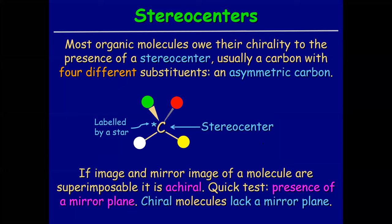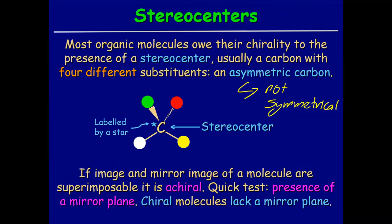When you have four different groups you will have a stereo center. When you have four different groups you will have a stereo center, and this would be an asymmetric carbon - pretty much what this means is not symmetrical, no center of symmetry. If there is a center of symmetry, then there is a mirror image. If there is a mirror image, then you don't have a chiral carbon and that would be an achiral structure.